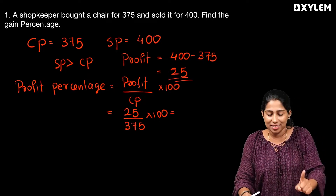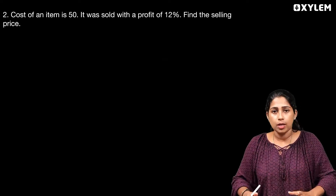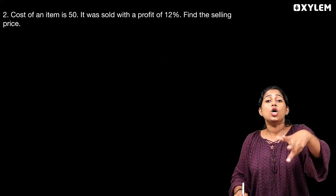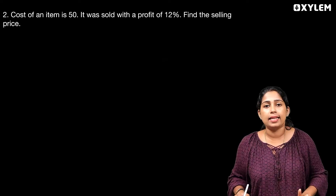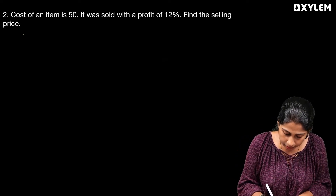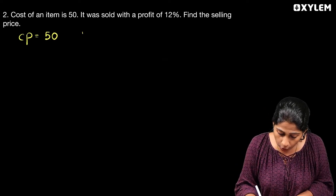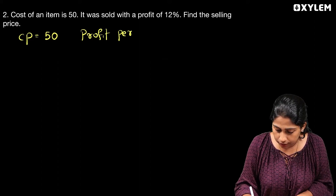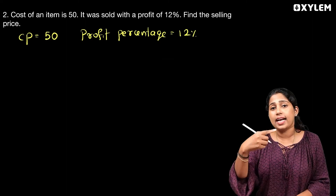Here is another question: The cost of an item is 50 rupees. It was sold with a profit of 12%. Find the selling price. So cost price equals 50 rupees and profit percentage equals 12%.